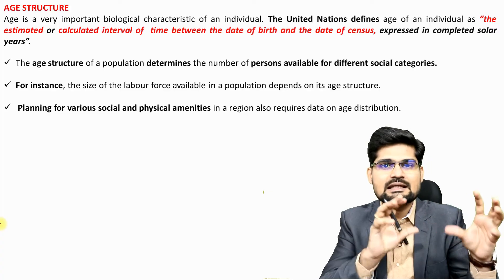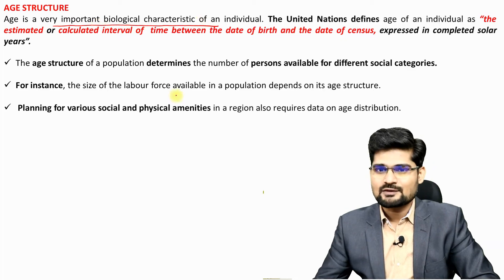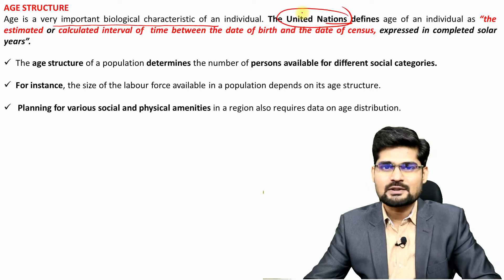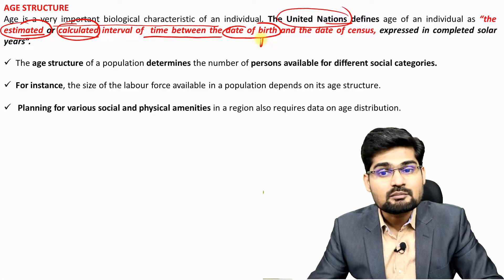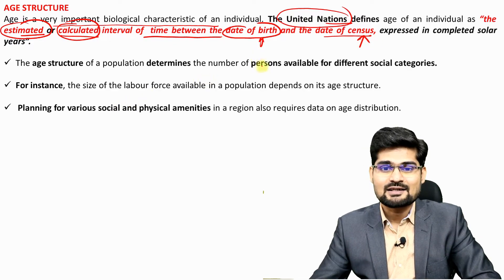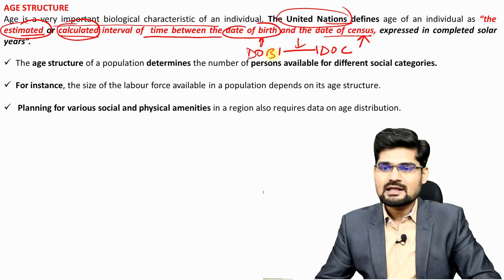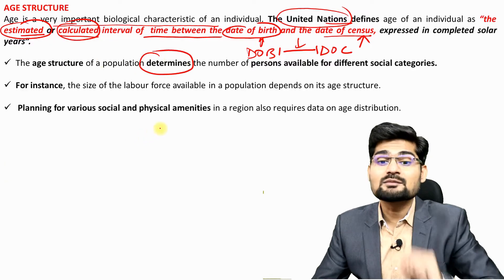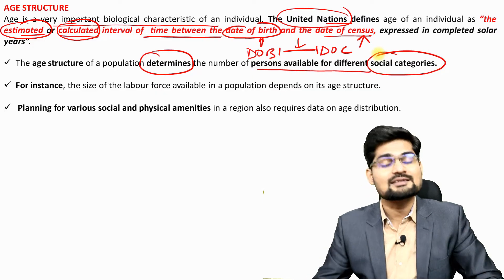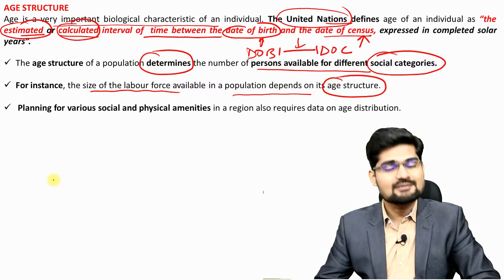In age-sex composition, the first element is age structure. Age is a very important biological characteristic. The United Nations defines the age of an individual as the estimated or calculated interval of time between the date of birth and the date of the census. Age structure of a population is important because it determines the number of persons available for different social categories — for instance, the size of the labor force available depends upon age structure.